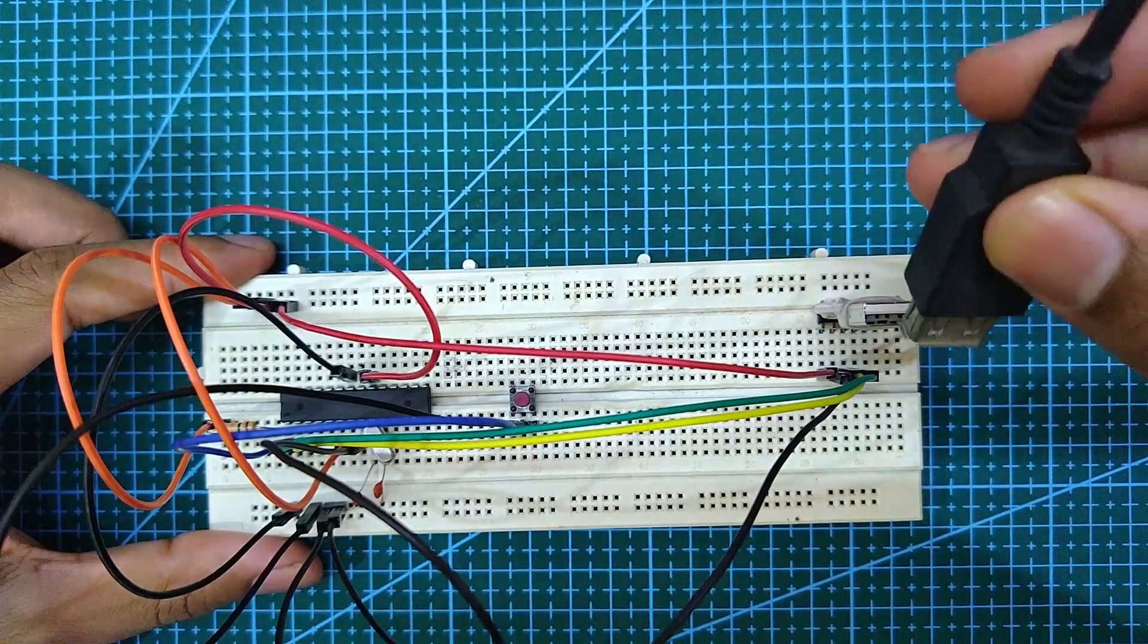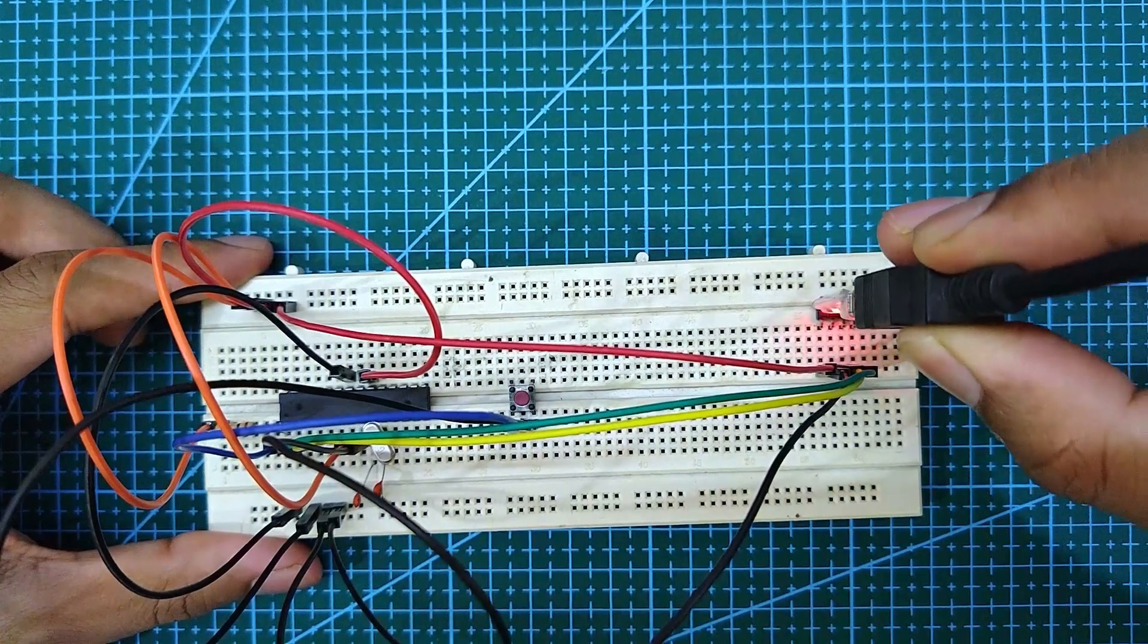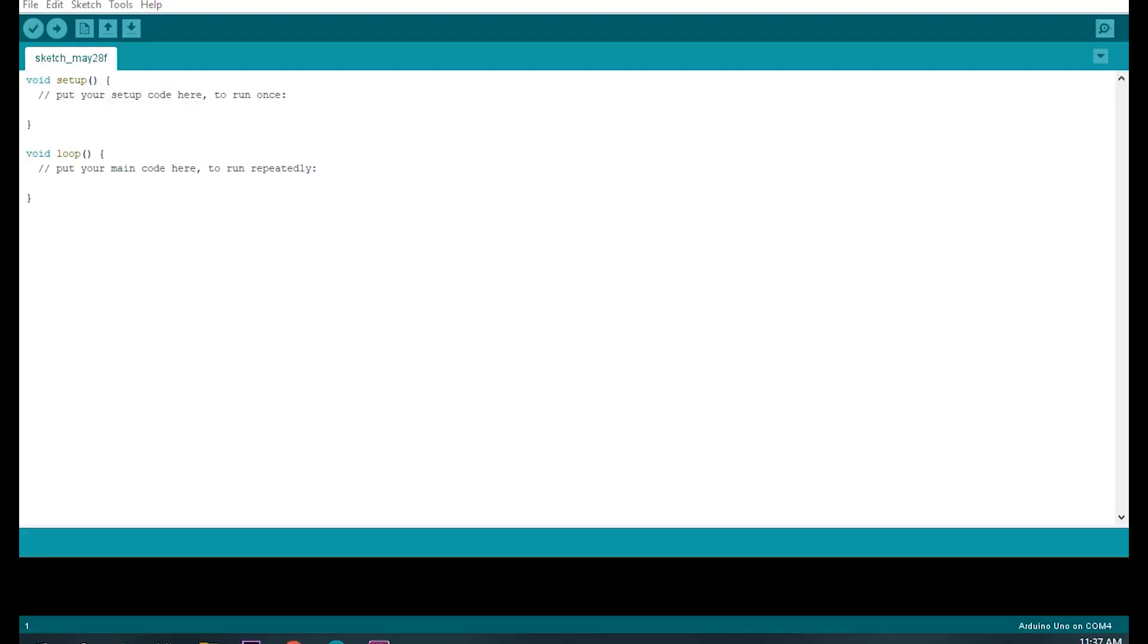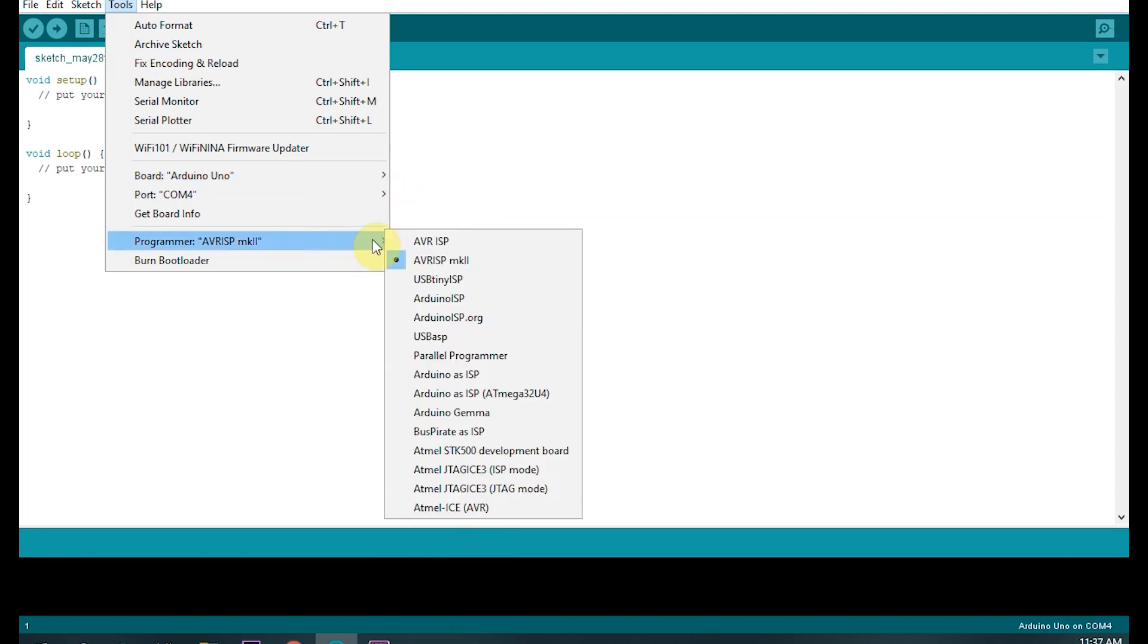Now connect the USB to TTL module to a laptop or desktop and open the Arduino IDE. Next, select your board, port, and programmer.